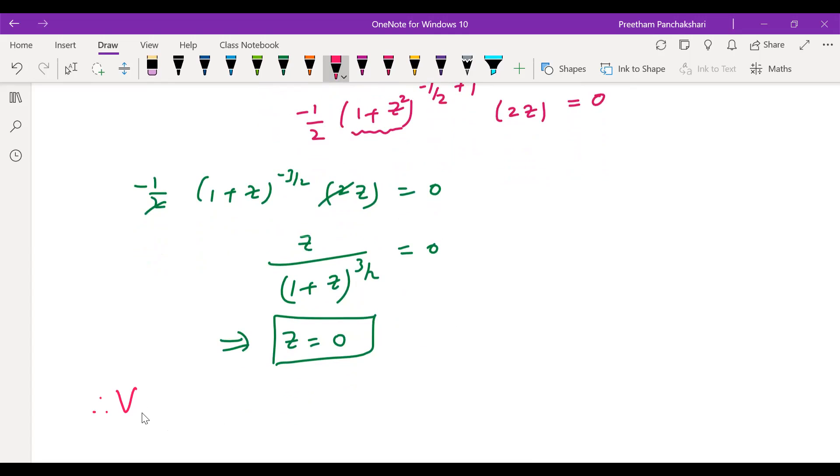Therefore V_max is given by that equation of V, 108 divided by root of 1 plus z square. But here z value required is 0. That means we are going to get 108 volts.